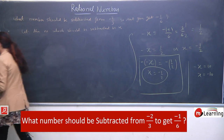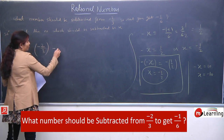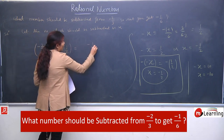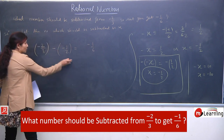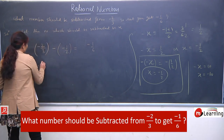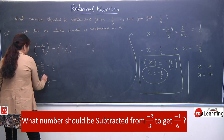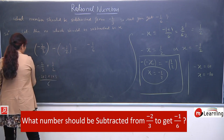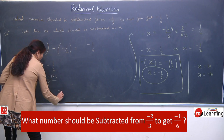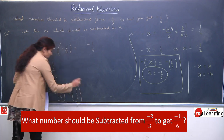Aap isse note down kar lein. Hamara jo equation tha: it was minus 2 by 3, what should be subtracted — subtracted value jo hai wo humare paas aa chuki hai — this should be subtracted, and result humara jo aana chahiye: minus 1 by 6. Hum LHS solve karenge aur LHS solve karne ke baad humara result minus 1 by 6 aana chahiye. Minus minus is plus, now we will take LCM. 3 and 2 ka LCM 6 hai. Now minus 4 plus 3 upon 6 means minus 1 upon 6. This is your LHS and RHS was also minus 1 upon 6 — means it is verified!